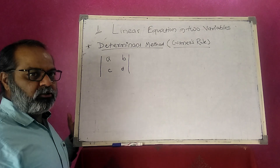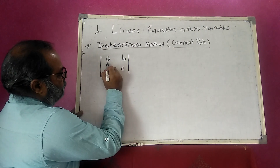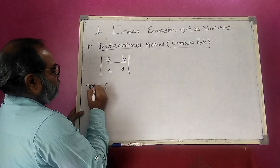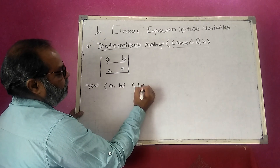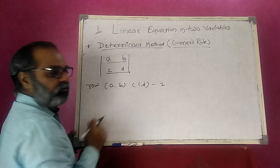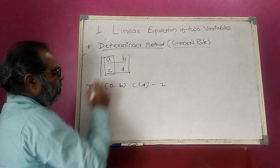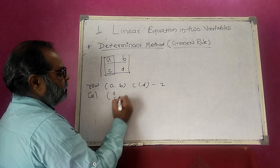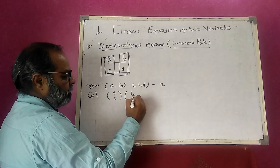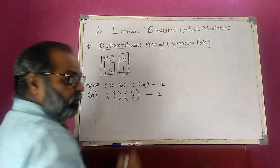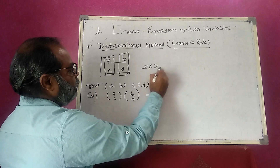This is called a determinant. There are two rows: the first row is AB and the second row is CD. There are two rows and two columns present in this determinant. The first column is AC and the second column is BD. Since there are two rows and two columns, this determinant is called a 2 by 2.